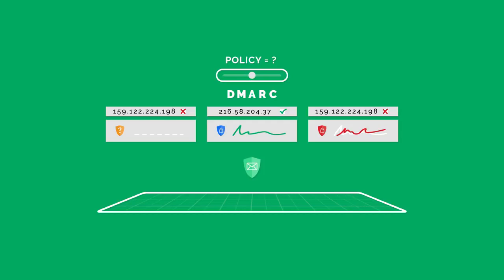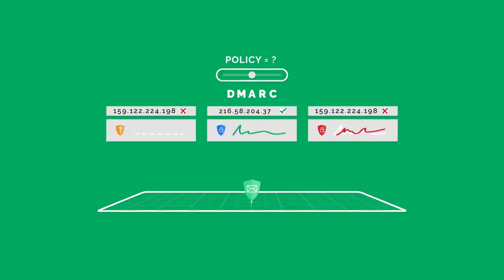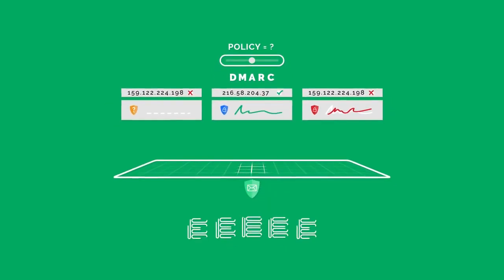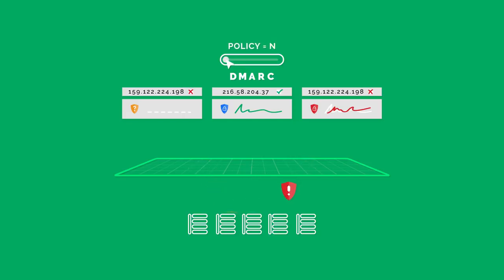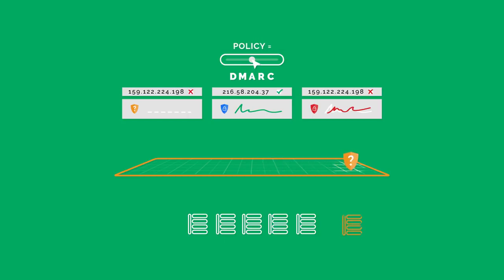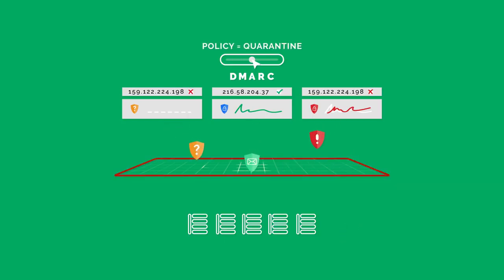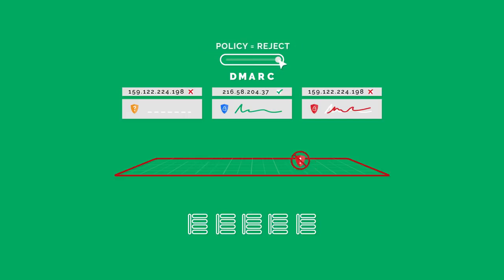With DMARC, you can instruct receiving servers on how to deal with emails that use your domain by setting your DMARC policy. Policy none: accept all email. Policy quarantine: send email that fails validation to spam. Policy reject: actively reject all unauthorized email.